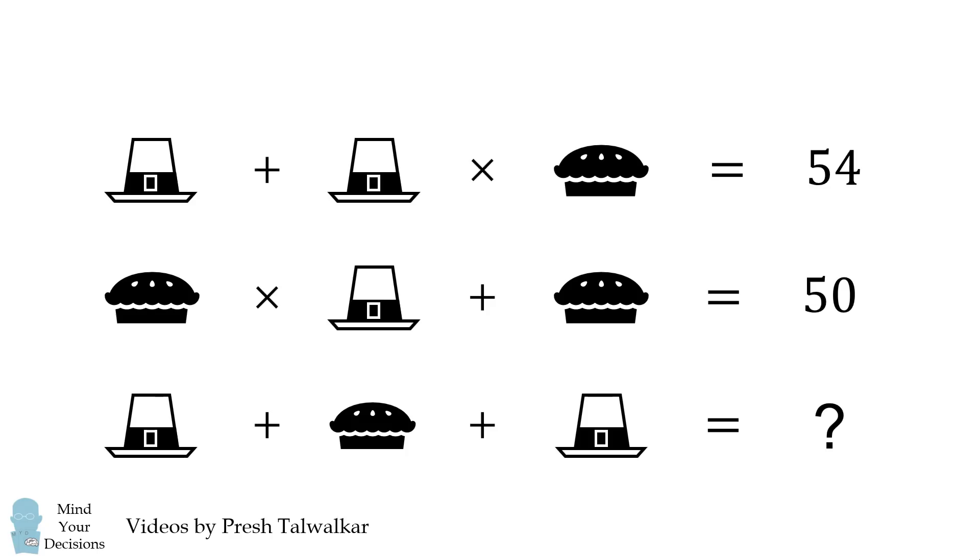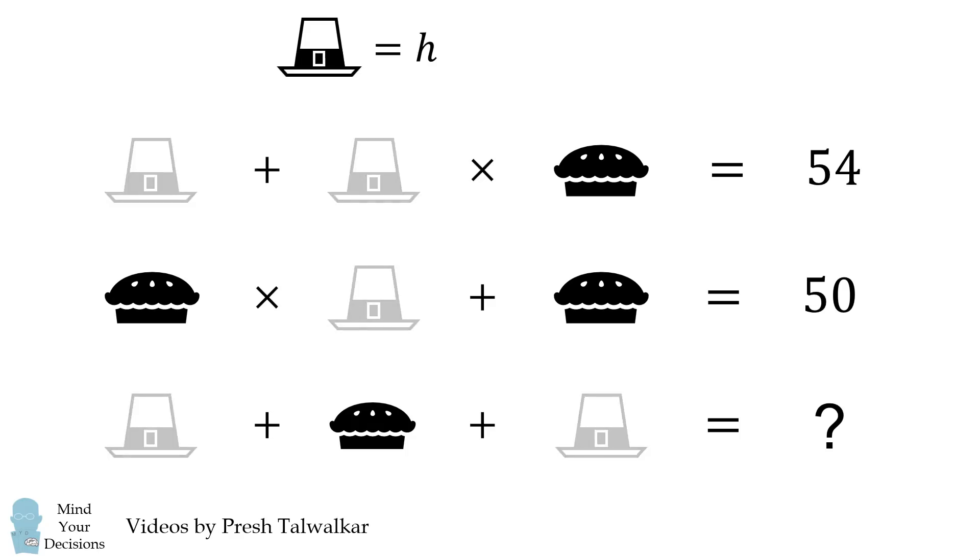The first thing that'll make it a little easier to present will be to substitute letters for the variables. So for the hat, we'll write the letter H, and then for the pi, we'll write the letter P.